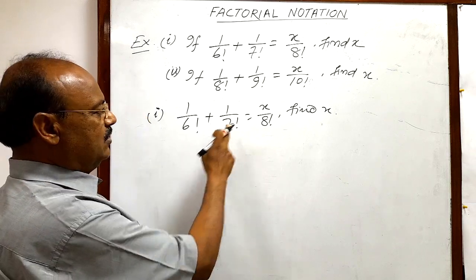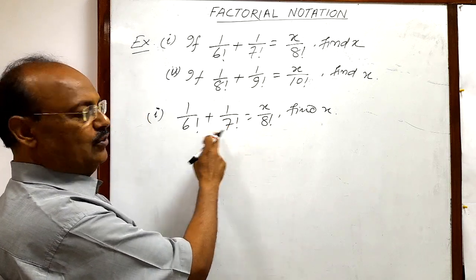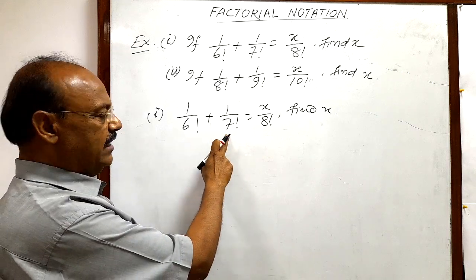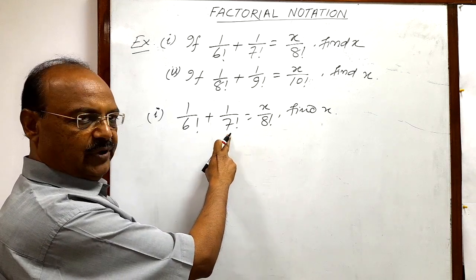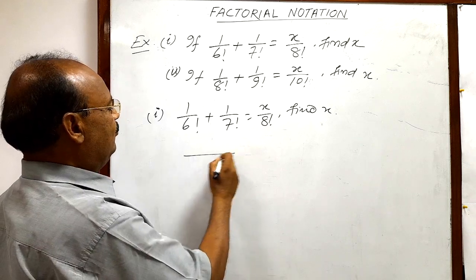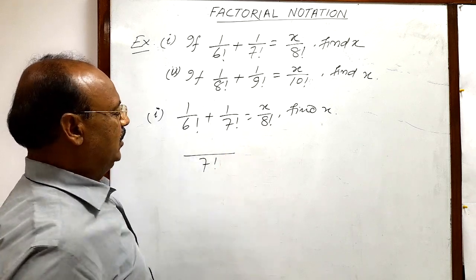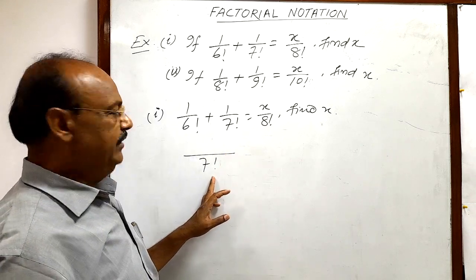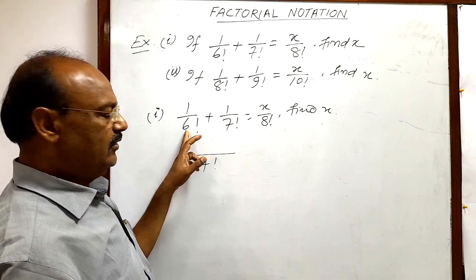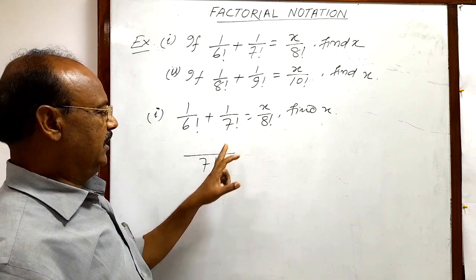In left hand side first of all we will take the LCM of denominators. So this is 6 factorial, this is 7 factorial. This is the bigger number. So LCM will be 7 factorial. Because this LCM 7 factorial will be divided by both the numbers, 6 factorial as well as 7 factorial, correct.